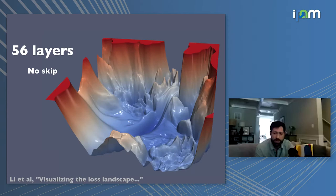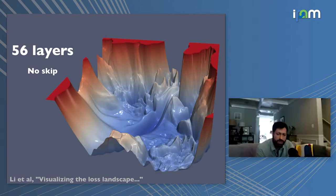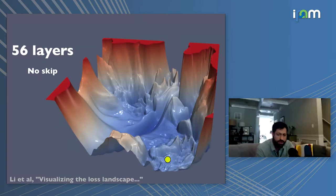Here's an example: a neural network with 56 layers but no skip connections — a network you probably wouldn't want to use. You can see lots of non-convexity with ripples around the minimum at the center. These might look like local minima, but since this is a two-dimensional slice of a high-dimensional function, there could be 'wormholes' at the bottom of these basins — other dimensions where you can decrease the loss and escape. It's not really clear whether there are true local minima in these loss landscapes.